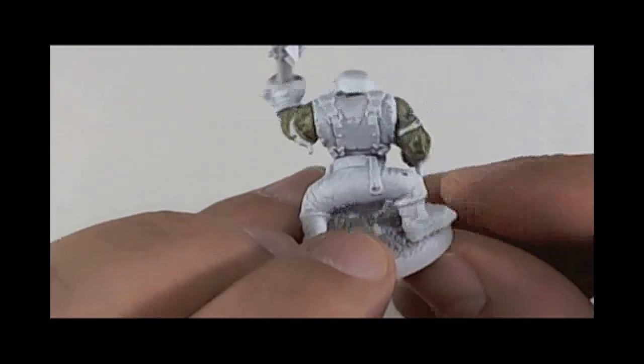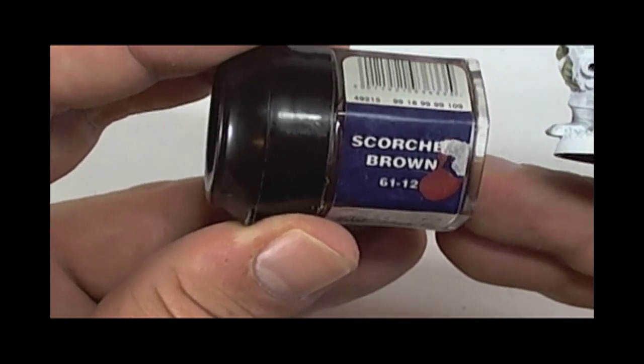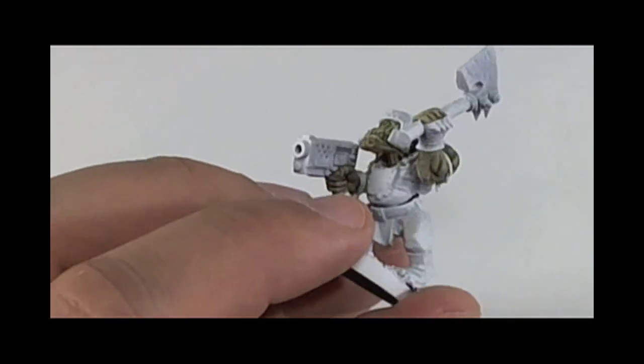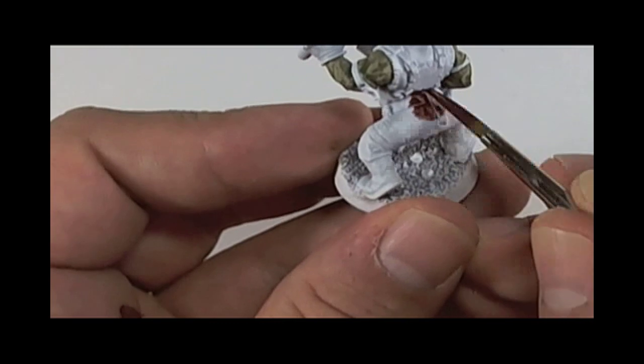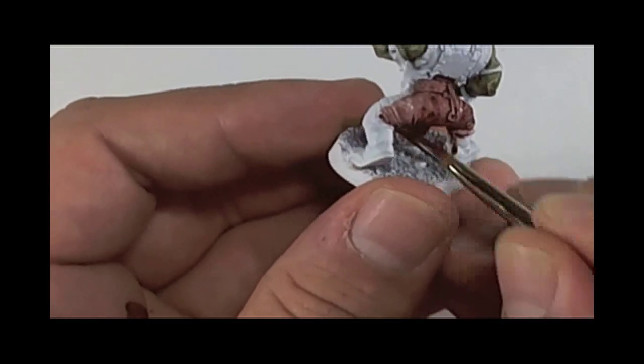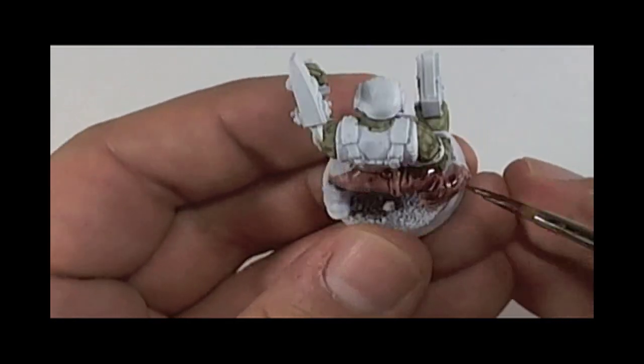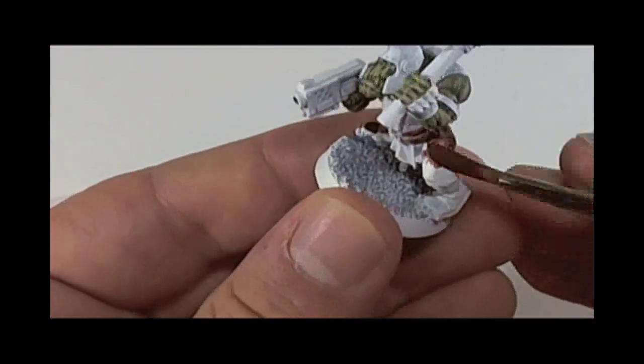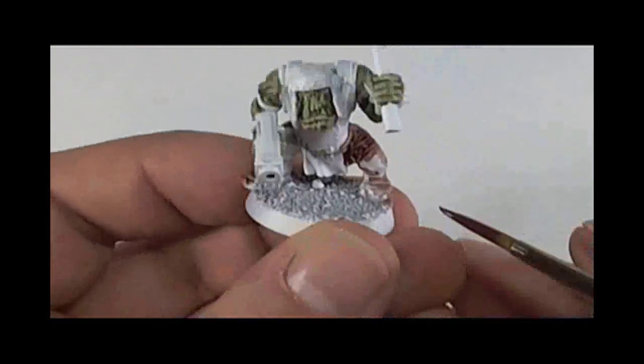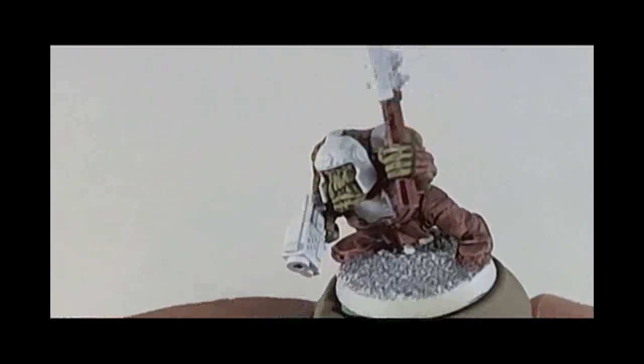And once this is done, the next color is scorched brown and we'll apply this to all the other areas apart from the axe blade, the gun, and all the areas we want painted in our clan color. In this case it's going to be a Bad Moon orc, so we'll be using some yellow on those plates. And again, the scorched brown is diluted half and half with water.